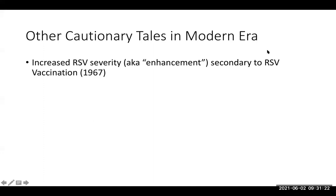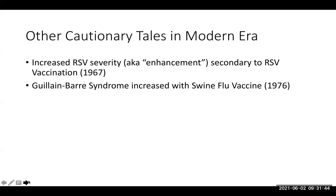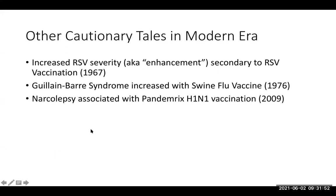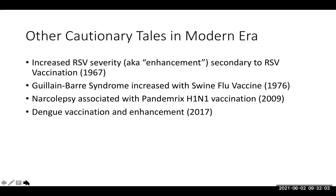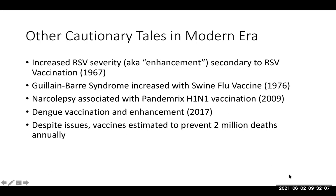In terms of other types of side effects seen in the modern era: some vaccines can cause enhancement, where you actually get worse disease — RSV is an example where a non-neutralizing immune response worsens infection. Guillain-Barré was seen at high rates with the swine flu vaccine in the seventies. Narcolepsy was seen with one H1N1 European formulation called Pandemrix. There was also dengue vaccine enhancement in 2017. Despite these issues, vaccines are estimated to prevent at least 2 million deaths annually from vaccine-preventable diseases.